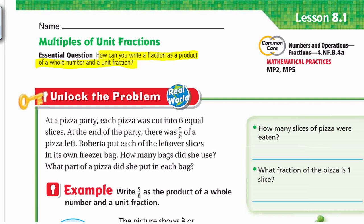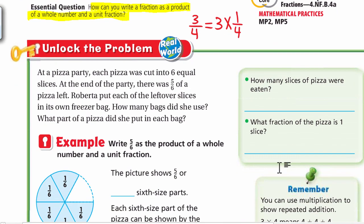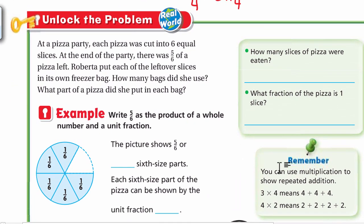In today's lesson we will learn how to write a fraction — for example, 3/4 — as a whole number, which is 3, multiplied by a unit fraction, which is 1/4. To understand how we do this, let's unlock the problem.